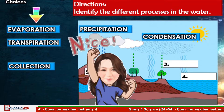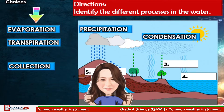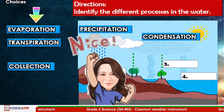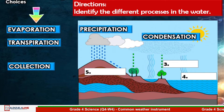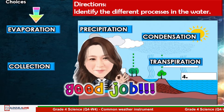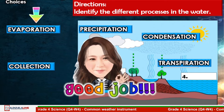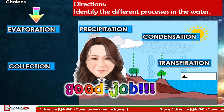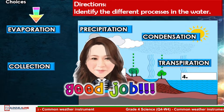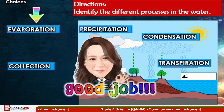Number three: It is the process by which moisture is carried through plants from roots to small pores on the underside of leaves. Good job! The answer is Transpiration. Let's have the next number.